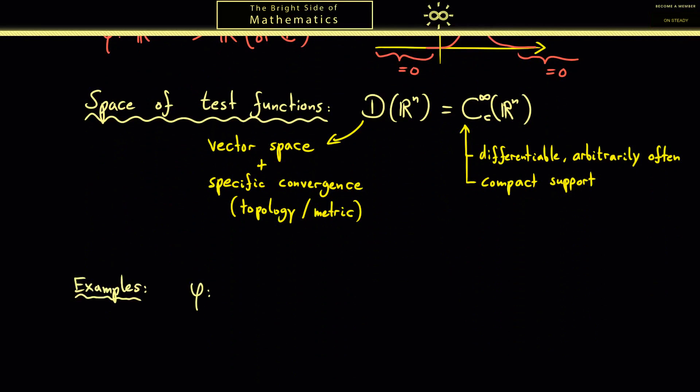As promised we do this in n dimensions, so all our test functions are defined on R^n and mapped into the real numbers R. Now the simplest example is of course the function that is 0 everywhere. Both properties are fulfilled because it is 0 outside of a bounded set and you can form all the derivatives as often as you want and they all exist.